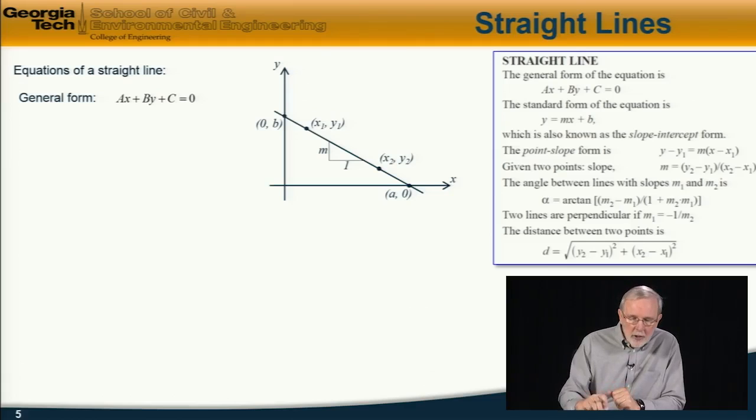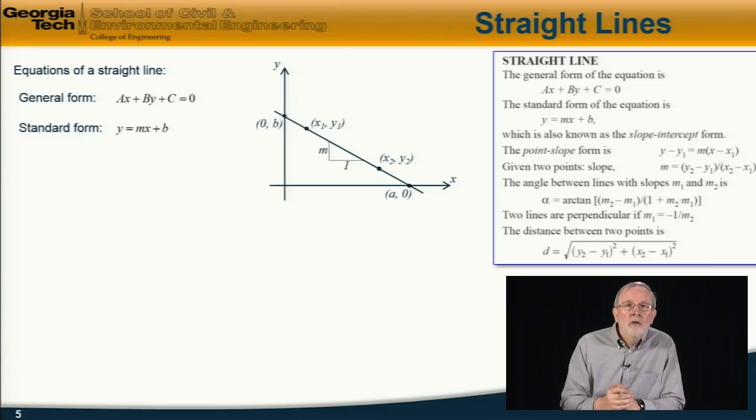The next form which is commonly used is called the standard form, y = mx + b, where in this equation m is the slope of the line.